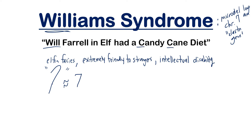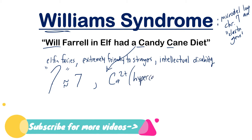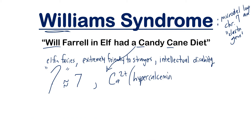Moving further, when you see 'candy cane' there are two C's, and those give us the last two primary symptoms. The first C stands for calcium — these patients have hypercalcemia. The reason is an increased sensitivity to vitamin D. Vitamin D, towards the end of its pathway, increases calcium absorption in the GI tract. So with increased vitamin D sensitivity, you end up in a hypercalcemic state.